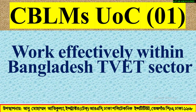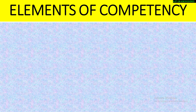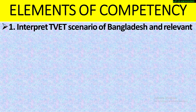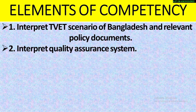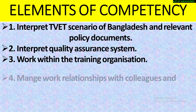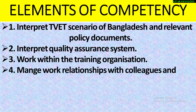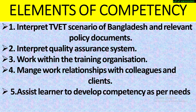The first CBLM's elements of competency are: interpret TVET scenario of Bangladesh and relevant policy documents; interpret quality assurance systems; work within the training organization; manage work relationships with colleagues and clients; assist learners to develop competency as per needs and interest. These are the elements with their AQ numbers.